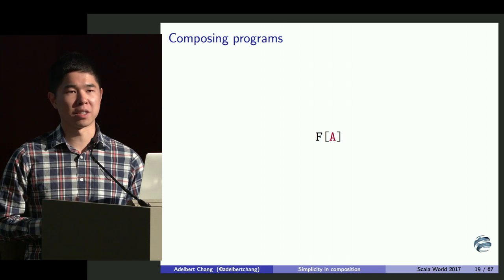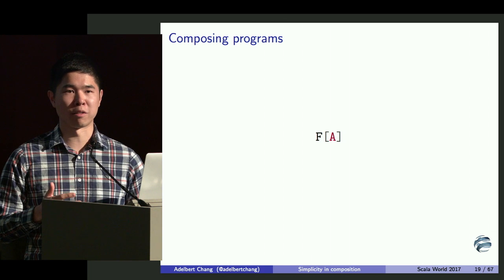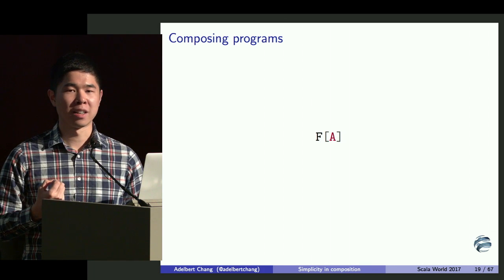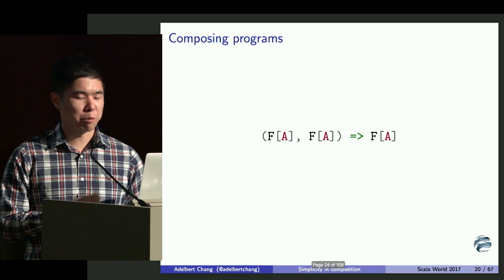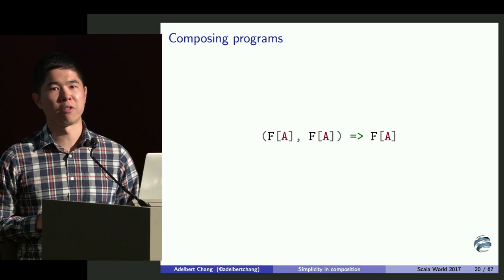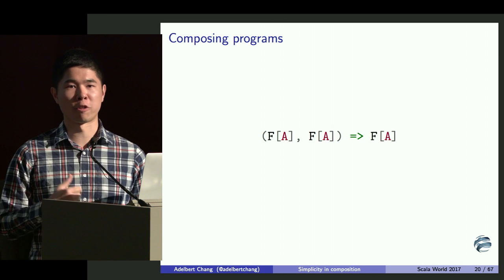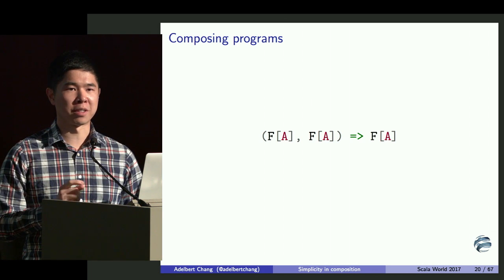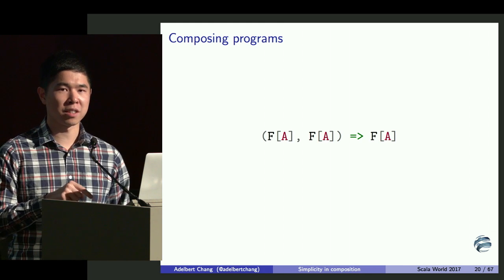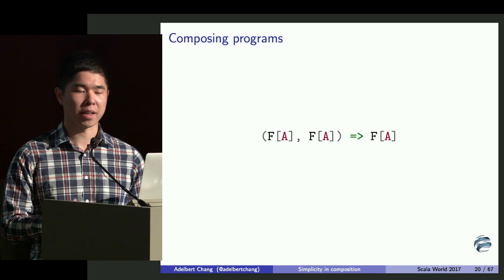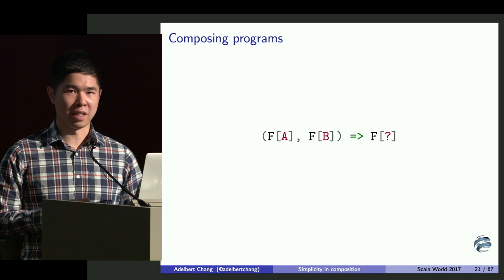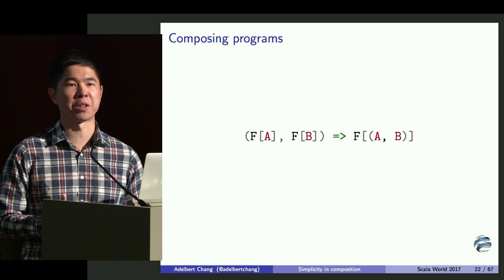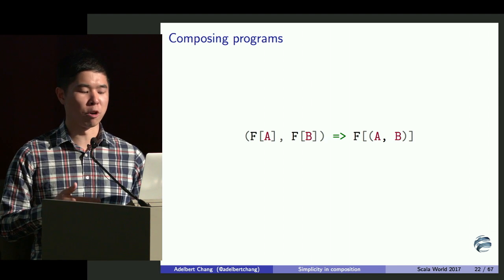We can think about F as the effect or program or module, and A as the thing the module produces. F of A is a program that, for some notion of evaluation, may or may not produce an A when run. You can think about F as Future, IO, list, or option. Now we want to compose programs. The first thing we might try is to take two F of A's and get back an F of A — but that's just a glorified version of what we did before. What we can do now, having split this into a type constructor and type parameter, is fix the type constructor and vary the type we get back. Given an F of A and an F of B where F is the same, we want to get back an F of another thing — the simplest thing being to pair them together.